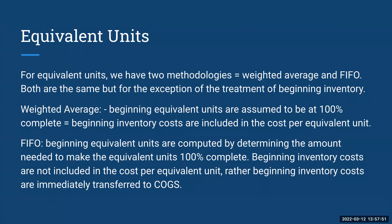In process costing, we have two methodologies: weighted average and FIFO. Both are exactly the same except for one particular exception — how we treat beginning inventory. Under weighted average, all beginning inventory equivalent units, no matter how complete they say they are, we assume they were 100% complete during the period, and we include those costs in the cost per equivalent unit. Under FIFO, the beginning equivalent units are computed by determining the amount needed to make them 100% complete. For example, if I have 10,000 units that are only 20% complete as to materials in beginning inventory, my equivalent units are going to be 80% to make those 100% complete.